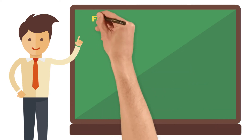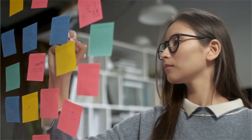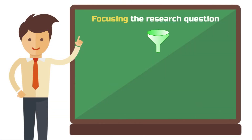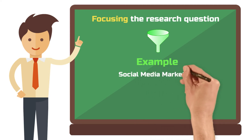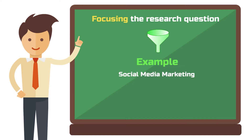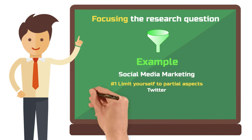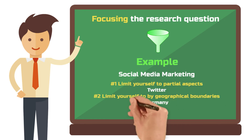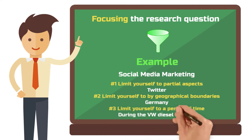At this point, you are ready to formulate your research question. To do this, we need the topic that you have thought about or have been assigned. The narrowing down of your topic must also be reflected in the research question. Let's work with an example. Your overall topic is social media marketing. First, limit yourself to partial aspects — for example, Twitter. Limit yourself to a geographical area — for example, Germany. And limit yourself to a period of time — for example, during the Volkswagen Diesel scandal.